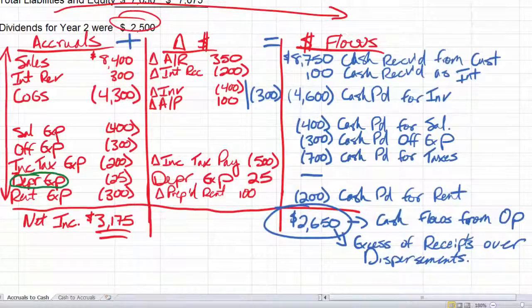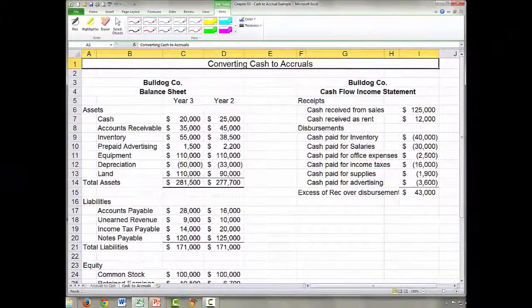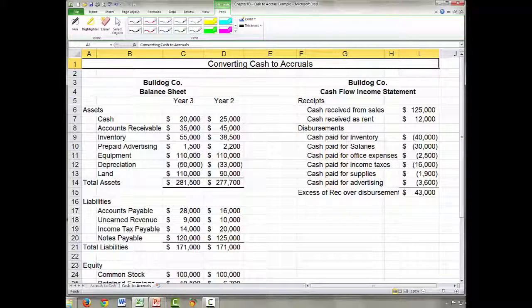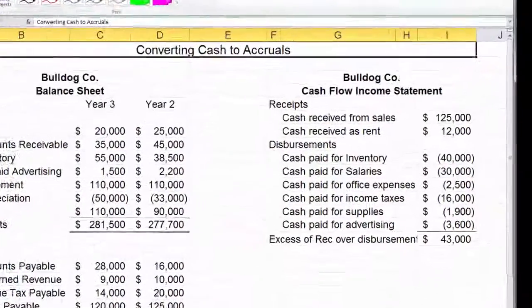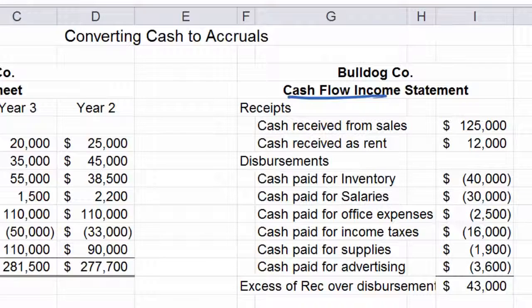Now, I'd like you to go ahead and flip to the next page. You should see a cash to accruals conversion from that PDF that I gave you. What I'd like you to do is do the same thing we just did. Only difference now is we've got cash information. You can tell because it says it's a cash flow income statement. It also says cash to accruals up there.